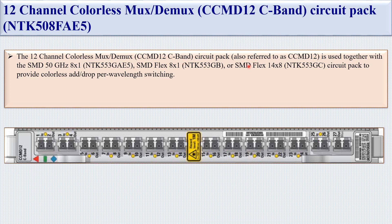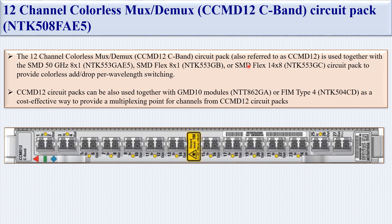CCMD 12 circuit packs can also be used together with the GMD 10 module or FEM Type 4 module as a cost-effective way to provide a multiplexing point for channels from the CCMD 12 circuit pack.